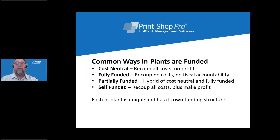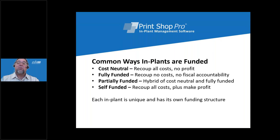Number three is partially funded. These are implants with a funding model that is a hybrid of cost neutral and fully funded. Funding comes from both the parent organization and other revenue streams, such as grants, student printing, fleet, or insourcing. Number four are self-funded implants. These are implants that not only have to recoup operational costs, but also can make a profit, so these are much more like commercial print shops.